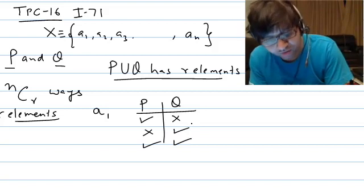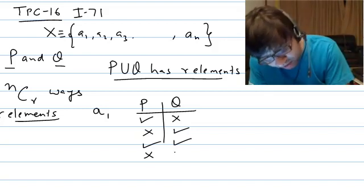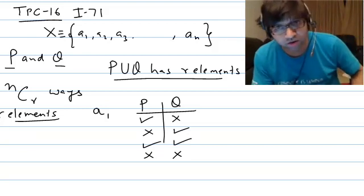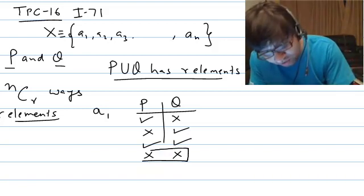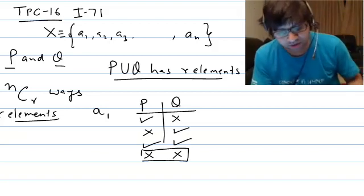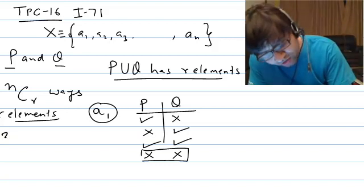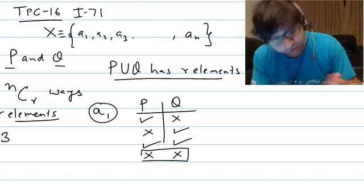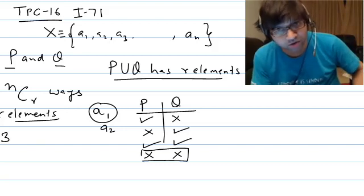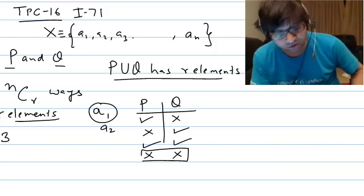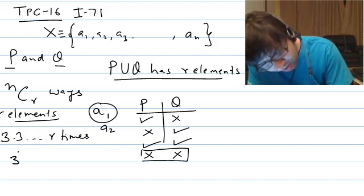The option that is not favorable is when A1 is selected neither for P nor for Q — if it doesn't go to P or Q, it won't be included in P∪Q. So for the r elements that are going to be part of P∪Q, we don't want this option. For each of the r elements there are three choices — three favorable options. This applies to each of the r elements, giving us 3 to the power r.